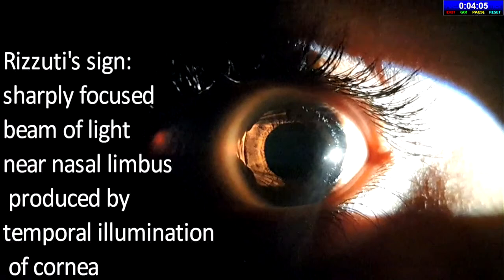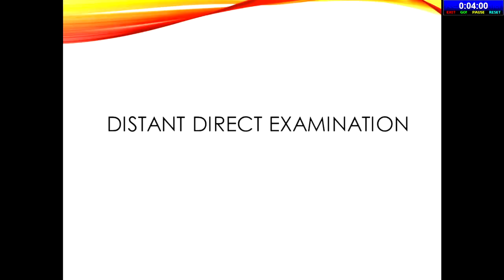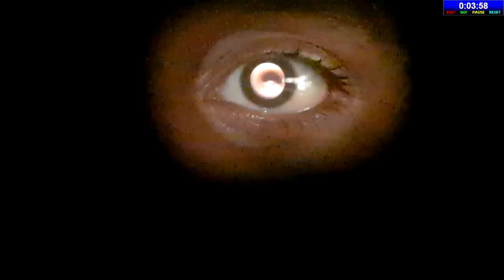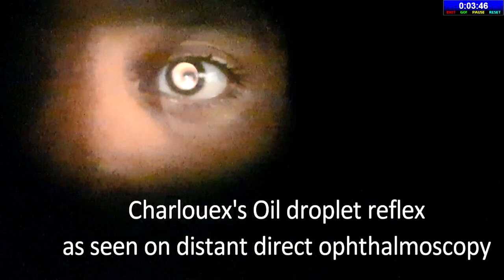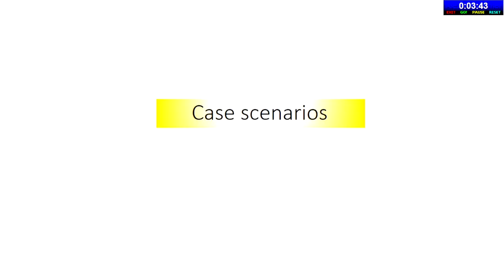Torchlight examination — leave it for last but do it, because Risotti sign is very often missed, and torchlight gives you the Risotti sign. Eclipse sign will tell you about the angle depth. Also examine for DDO (deep descemet's folds) — in DDO patients you will see retinal detachment, cataract, and corneal opacities. DDO is one of the most important things as part and parcel of corneal evaluation.